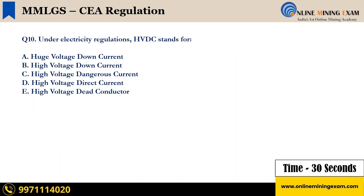Next question: under electricity regulation, HVDC stands for — A) Huge Voltage Down Current, B) High Voltage Down Current, C) High Voltage Dangerous Current, D) High Voltage Direct Current, E) High Voltage Dead Conductor. Your time starts now.